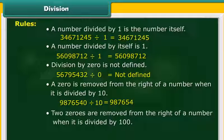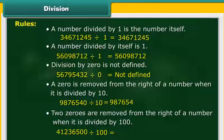Two 0's are removed from the right of a number when it is divided by 100. 41236500 divided by 100 is equal to 412365.